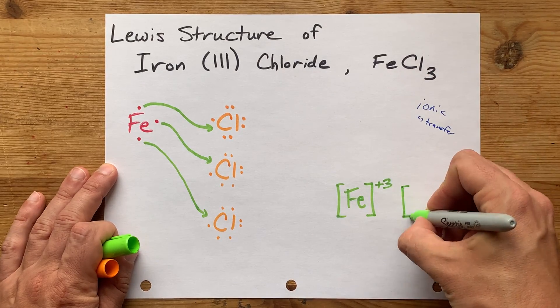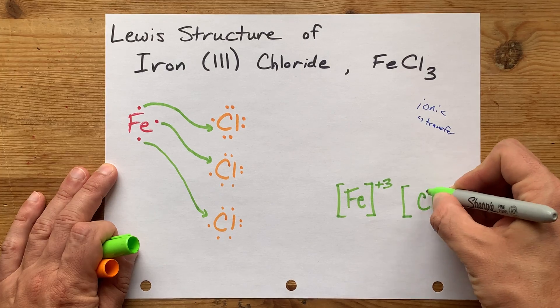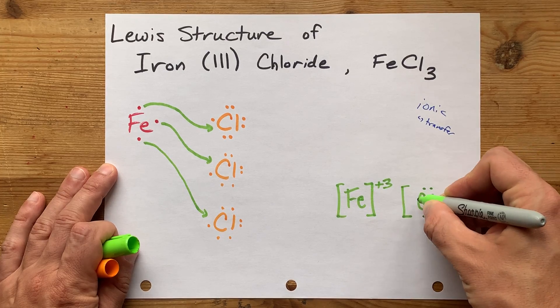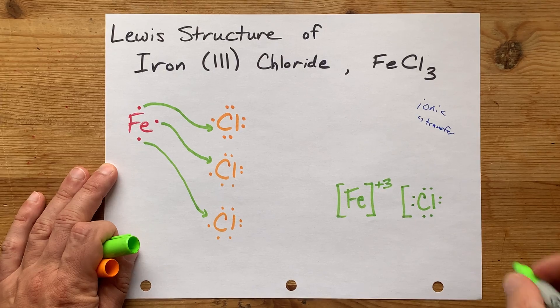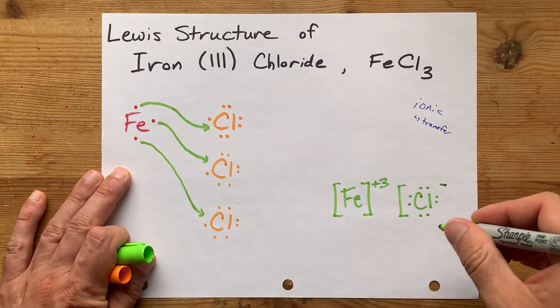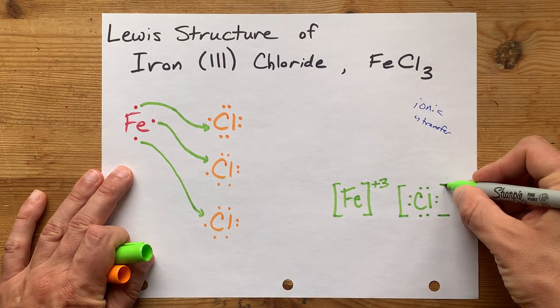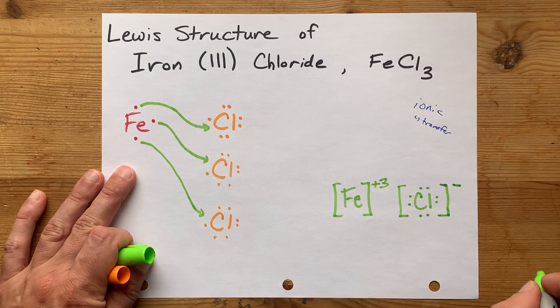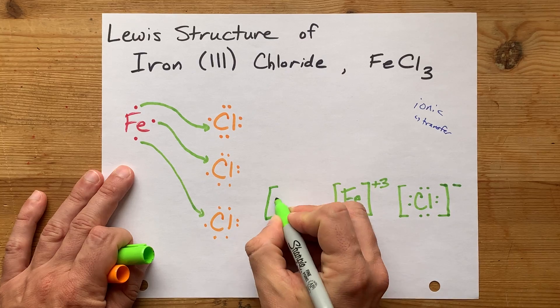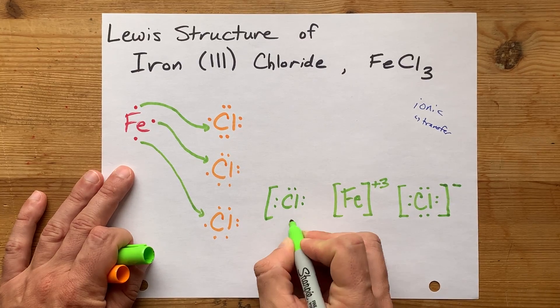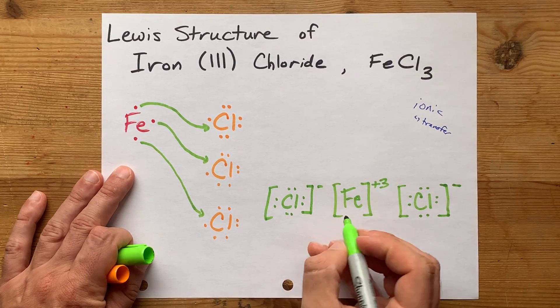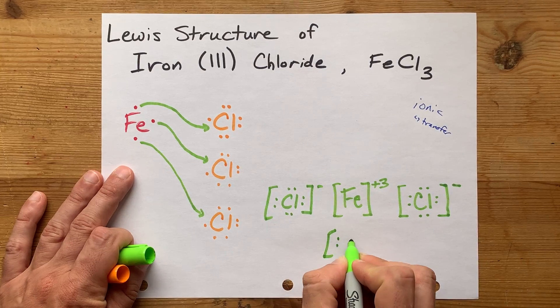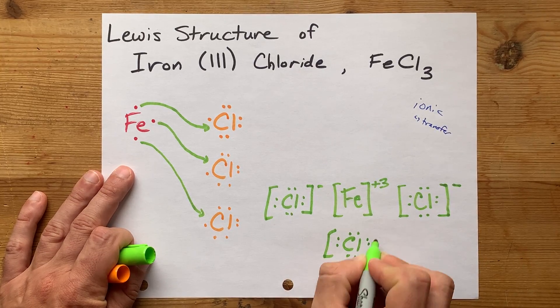Then, I want you to draw your chlorines. They had 7 valence electrons plus 1 because it accepted an extra electron from iron. Put it in square brackets to show it's an ion with a minus 1 charge. And then, as annoying as it's going to be, I want you to redraw that 3 times because you need 3 of them to accept all of the electrons from iron.